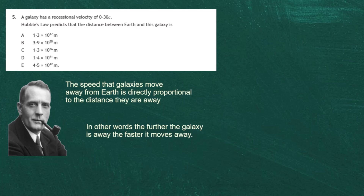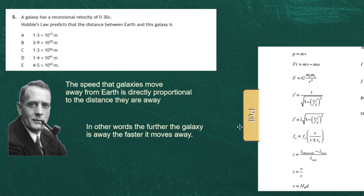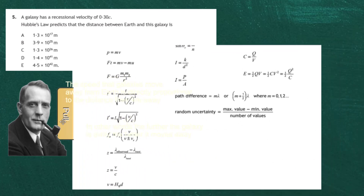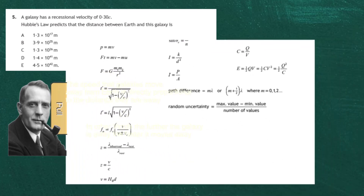We can look up our relationship sheet and there it is. The equation we're going to use is v equals h-naught times d. The recessional velocity v is equal to Hubble's constant h-naught times the distance d. So all we have to do is write down that equation and we're on our way.